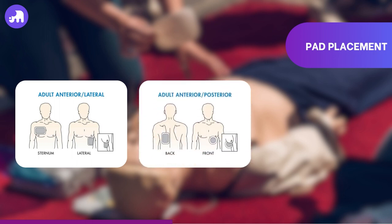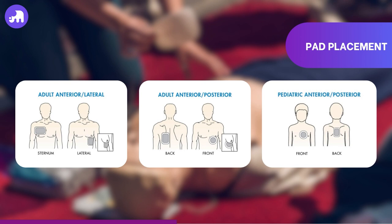The second option is anterior to posterior placement. The anterior pad is positioned on the upper right side below the clavicle. The posterior pad is placed on the left side of the back, between the spine and the scapula, at the heart level. This positioning ensures a thorough dispersion of the electric current across the heart and is particularly useful when extended CPR is expected or during patient transportation. For paediatric patients, the pads are placed in the anterior and posterior locations due to the smaller size of paediatric patients. The anterior pad is placed in the centre of the chest, while the posterior pad goes directly opposite on the back, capturing the smaller heart between the pads.